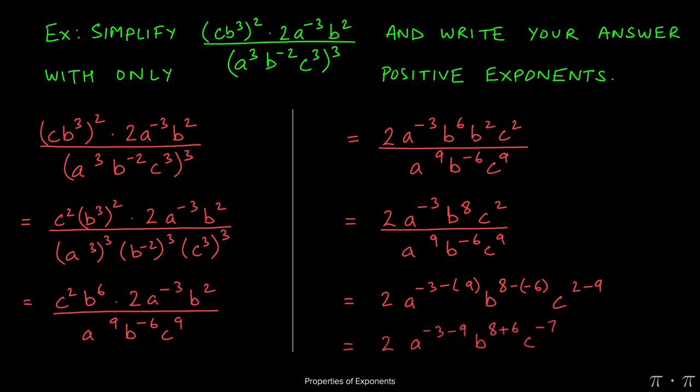This we can simplify further by just multiplying the parentheses out. So negative times positive will just give negative, negative times negative will give positive, and two minus nine can be simplified right away to give negative seven.